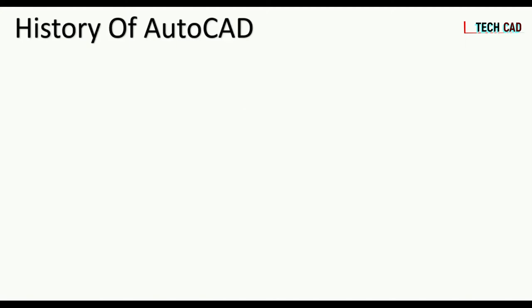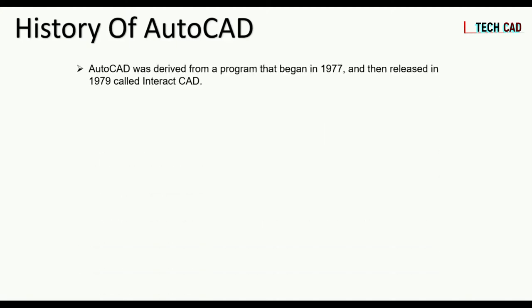Now we can see about the history of AutoCAD. AutoCAD was derived from a program that began in 1977 and was released in 1979, called Interact CAD — it is the first version of AutoCAD. Early Autodesk documents referred to it as Micro CAD, and those early files we now call DWG files or DXF files.